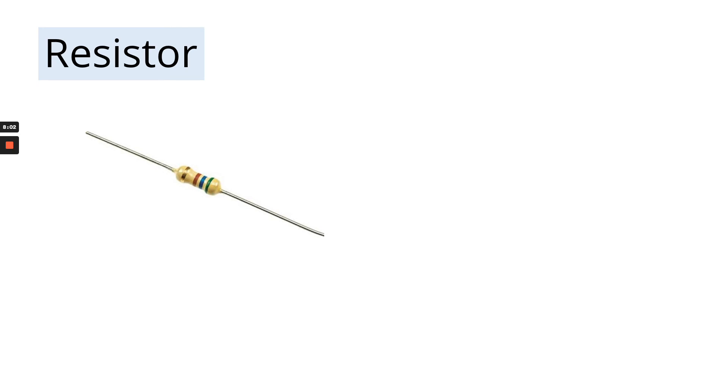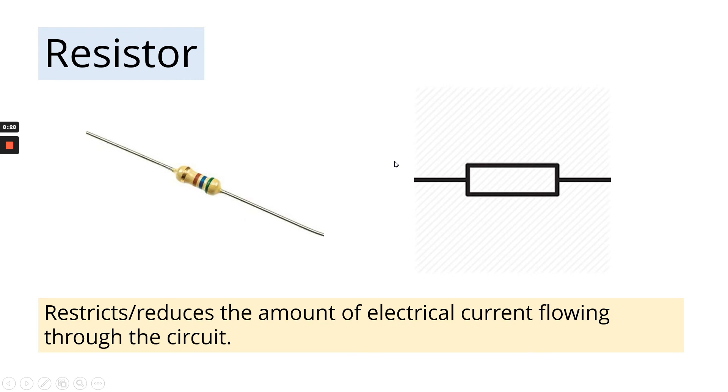Your next component is a resistor. These are really, really tiny, and they can come in lots of different sizes. And we have about six of them that we will be soldering onto our circuit boards for this project. So this is the electrical component symbol for a resistor. Note that the wires are on both sides here. And they restrict or reduce the amount of electrical current flowing through the circuit. It does not resist the amount of electrical current.